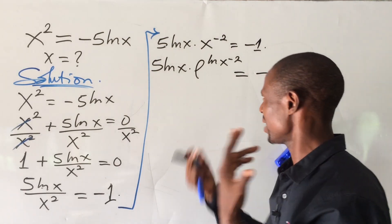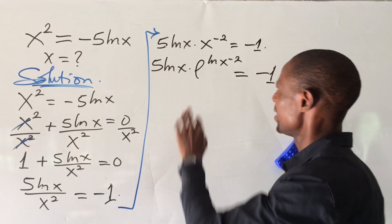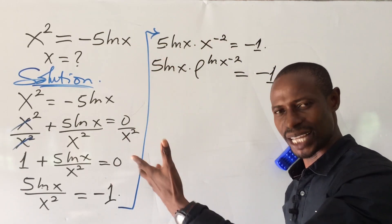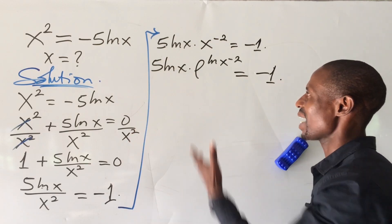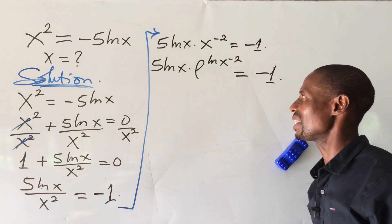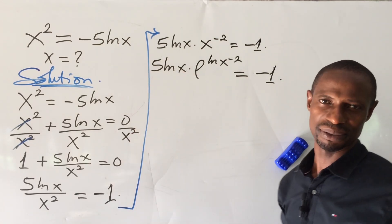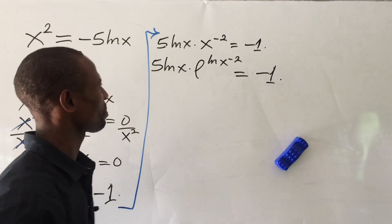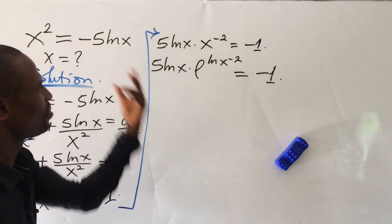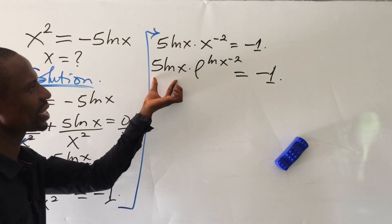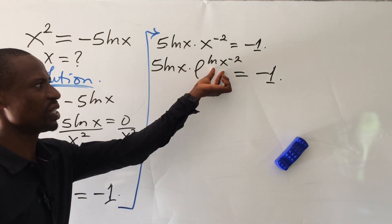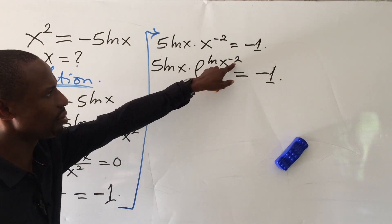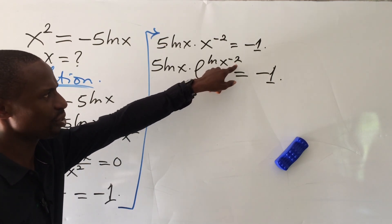What is playing out here is we are trying to get a pattern where we can introduce the Lambert W function into the system. But before we can introduce it, this expression must match the required form — we have this to the power of minus 2.